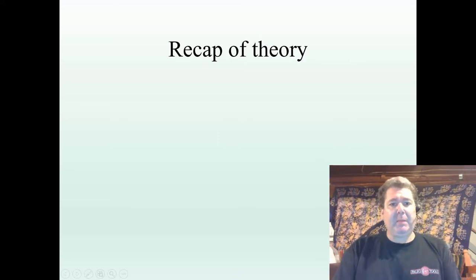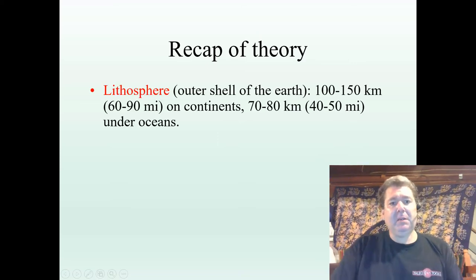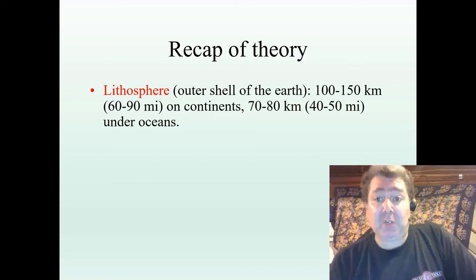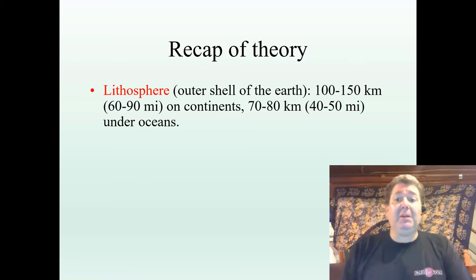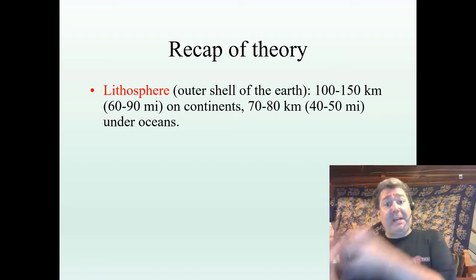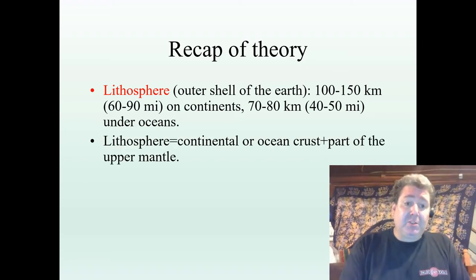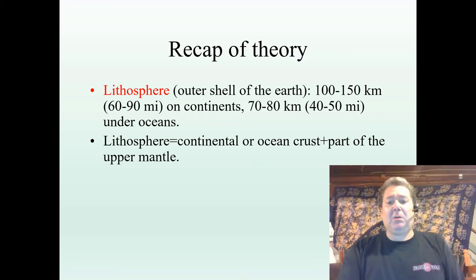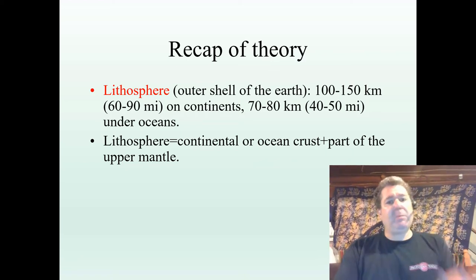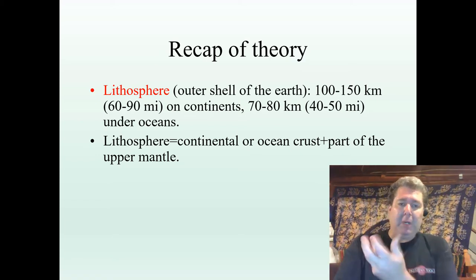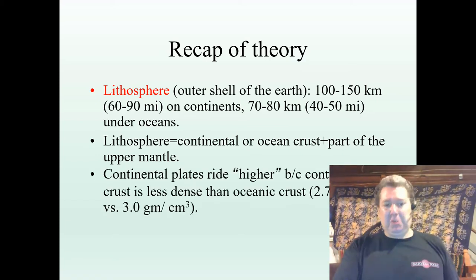Just to recap here real quick — plate tectonics. We have the lithosphere, that's the outer shell of our Earth. Our continents are much thicker and less dense than our oceanic crust. So the lithosphere — being continental or oceanic crust plus that uppermost part of the upper mantle — moves around together as a rigid body on the asthenosphere.